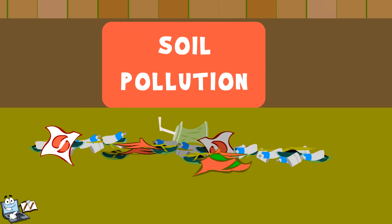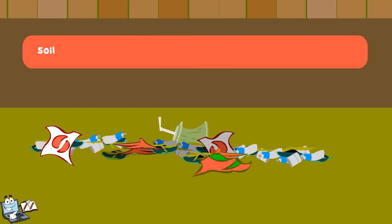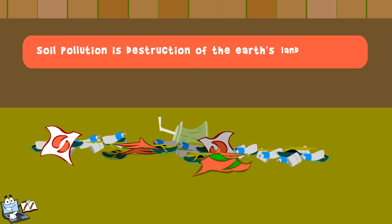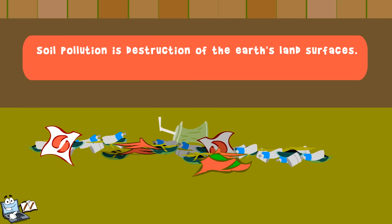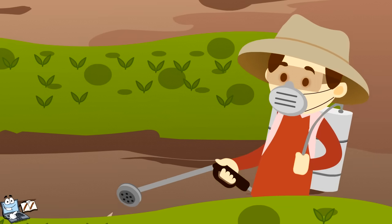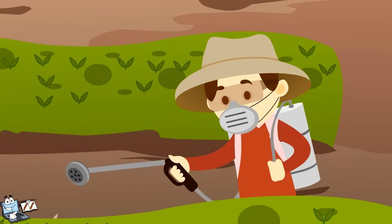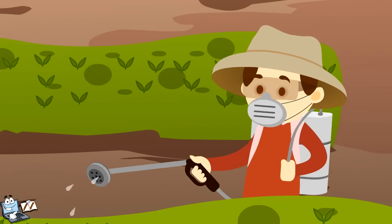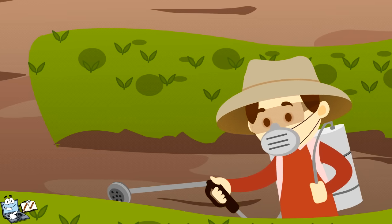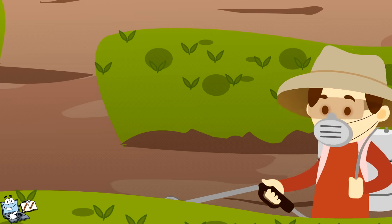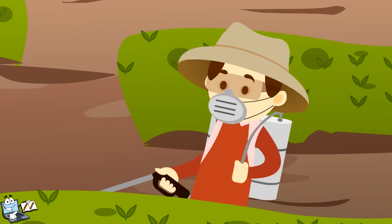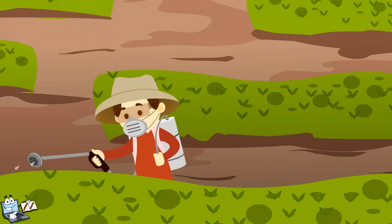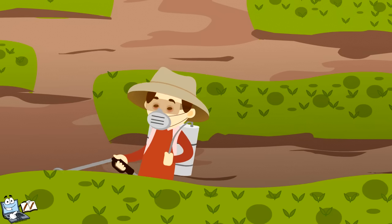Now we will learn about soil pollution. Soil pollution is the destruction of the Earth's land surfaces. It is caused by solid waste and chemicals. Land is getting polluted through the toxic substances released by the use of chemical fertilizers, insecticides, pesticides, industrial wastes, and more.